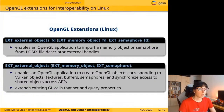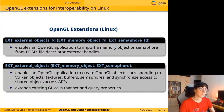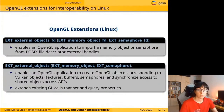The OpenGL interoperability extensions are grouped in two main categories. The first, containing EXT_MemoryObjectFD and EXT_SemaphoreFD, enables OpenGL applications to import memory objects or semaphores from POSIX file descriptor external handles. The second, the EXT_ExternalObjects category, contains extensions that enable OpenGL applications to create OpenGL objects corresponding to Vulkan ones and synchronize access to shared objects across APIs. It also extends some existing material calls to set and query properties with new properties.